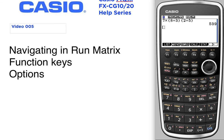Your option key has all of your different options, and they've been put together according to what their functions are. So 'list', for example, has all your list operations. Pressing exit goes back, and exit again gets me back to my main screen.